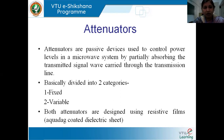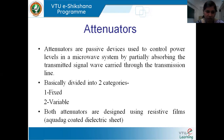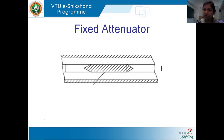These passive devices absorb the power carried in the transmission wave, either partially or completely. According to their working nature, attenuators are divided into two categories: fixed attenuators and variable attenuators. In a fixed attenuator, the amount of attenuation is fixed and cannot be changed. In a variable attenuator, we can change how much attenuation we want as per the application. In both cases, we use a dielectric coated with a resistive film.